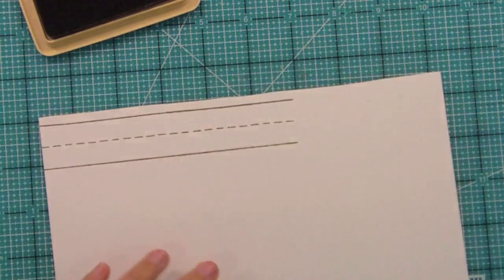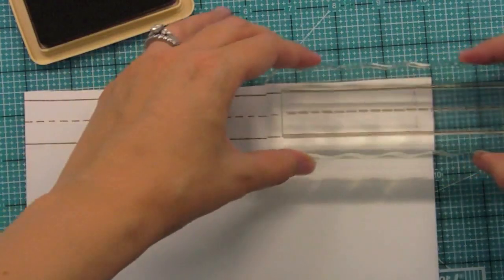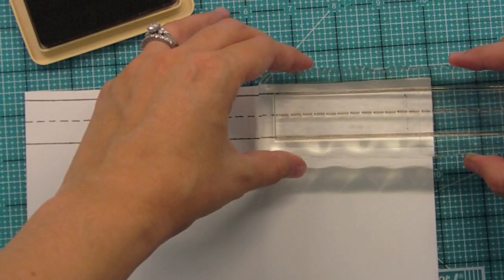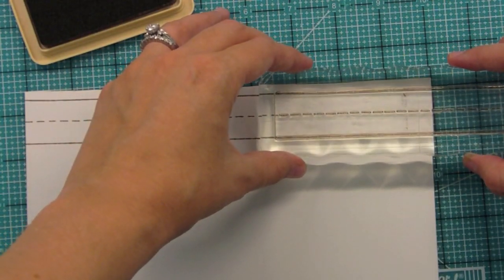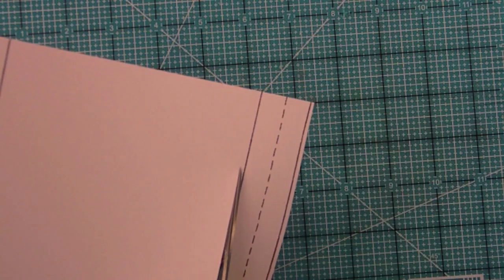Right now I'm just stamping the cursive line out from Schoolhouse Backdrops in slate ink. It's Adirondack slate ink, just a nice gray. And I'm just lining it up to make it one long line because I'm making a 9 inch by 4 inch card.